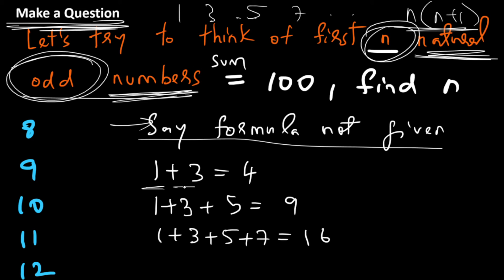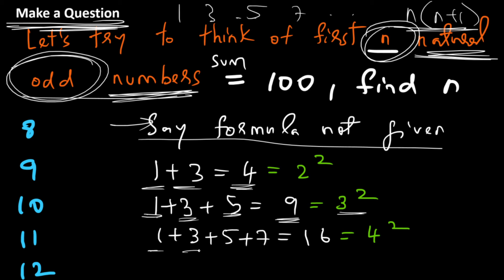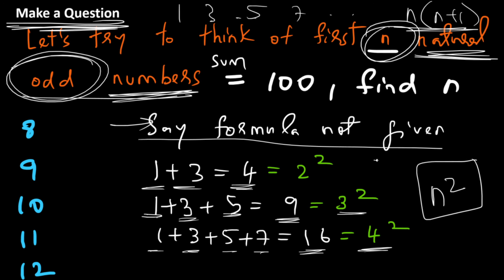You can see that when n = 2, the sum is 4 = 2². When n = 3, the sum is 9 = 3². When n = 4, the sum is 16 = 4². So the formula for the sum of the first n odd positive integers — the sum of the first n natural odd numbers — is n². That is what we've derived from the pattern.